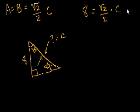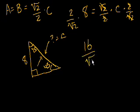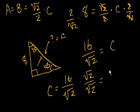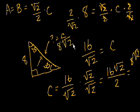To solve for C, multiply both sides by 2 over the square root of 2 — the inverse of the coefficient on C — so the square root of 2 and the 2 cancel. We get C equals 16 over the square root of 2. Rationalizing the denominator by multiplying by the square root of 2 over the square root of 2 gives us 16 square roots of 2 over 2, which equals 8 square roots of 2. So the hypotenuse C is 8 square roots of 2, and the other leg is also 8.